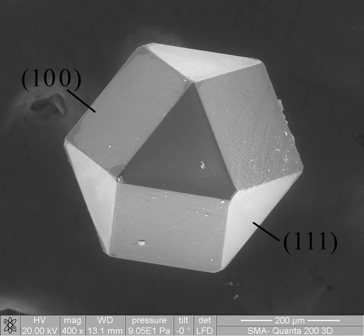Macrostructure is the appearance of a material in the scale millimeters to meters. It is the structure of the material as seen with the naked eye.